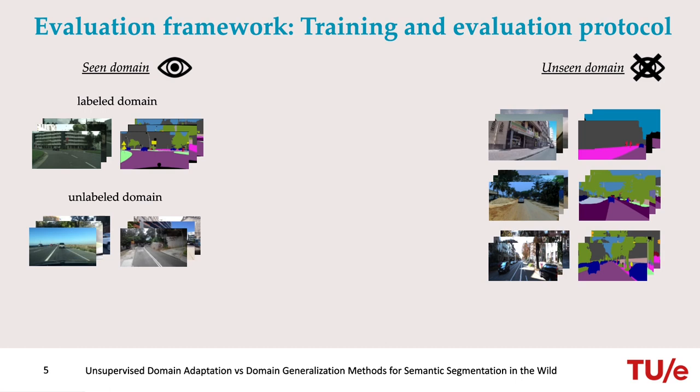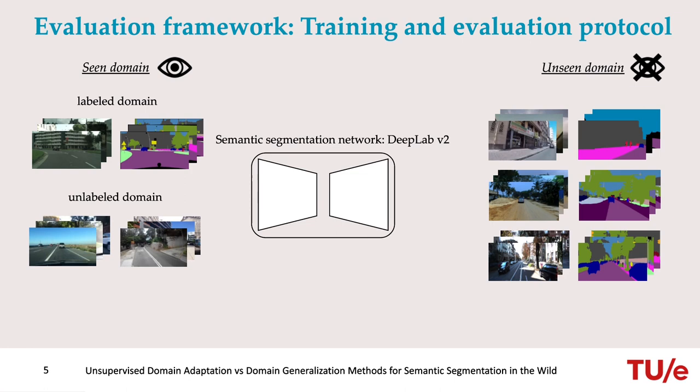To resolve architectural discrepancies between these two types of methods, our evaluation framework proposes a common semantic segmentation architecture — in this case, DeepLab B2. To measure the generalization capacity of the models, we propose to compute the unseen mIoU average, that is, the average mIoU over the datasets representing the unseen domain.